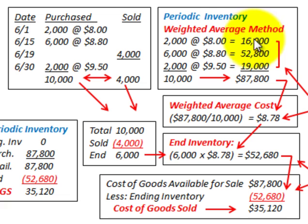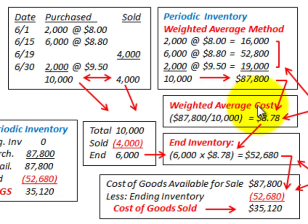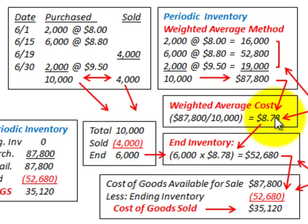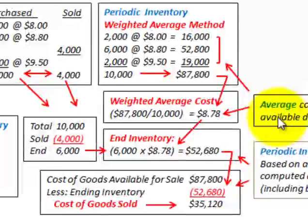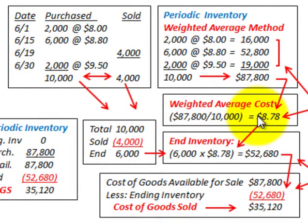Based on the unit price paid for each quantity, we come up with a total inventory value of $87,800. To determine the weighted average cost, we take the total inventory value of $87,800 and divide by the quantity of 10,000 units. That gives us a weighted average cost of $8.78. So we had 10,000 units available during the period at a weighted average cost of $8.78.